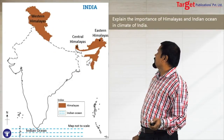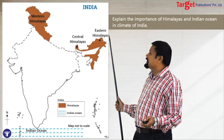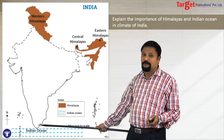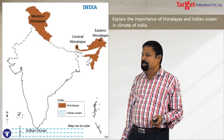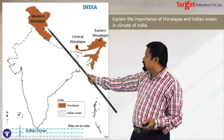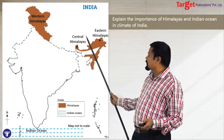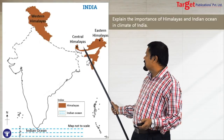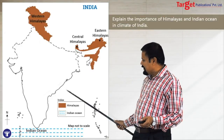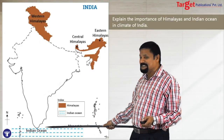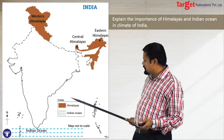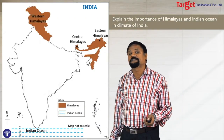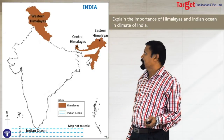There is also a question: explain the importance of the Himalayas and the Indian Ocean in the climate of India. In that case, show the Himalayas — the Western Himalayas, Central Himalayas, and Eastern Himalayas — and mark the Indian Ocean with a different color. In the index, write Himalayas and Indian Ocean, and then start writing your answer.